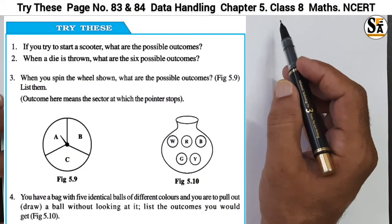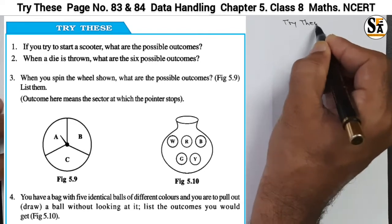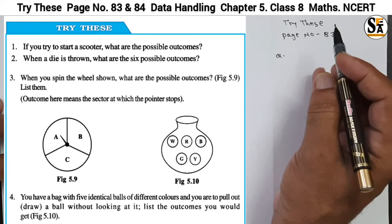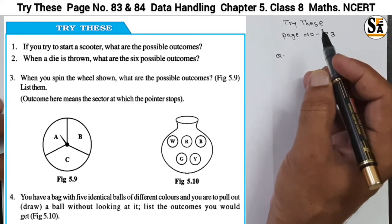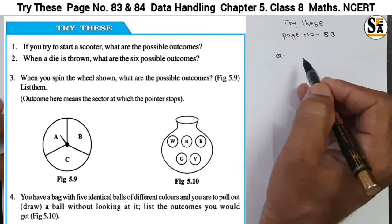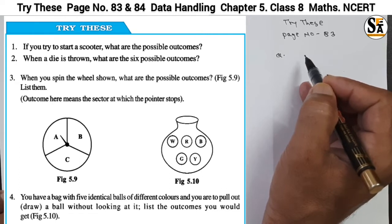See the questions under the 'Try This' section, page number 83, chapter Data Handling. The first question is: if we try to start a scooter, what are the possible outcomes? In this section, questions about chance and probability are asked.